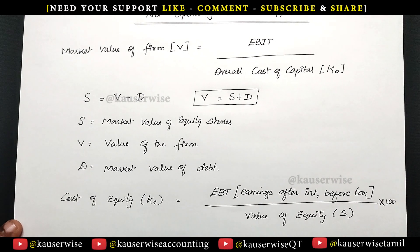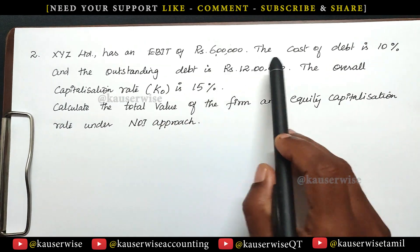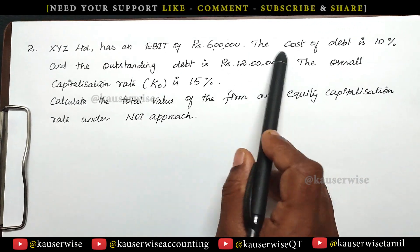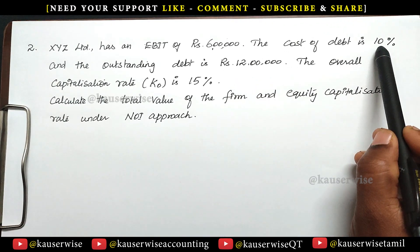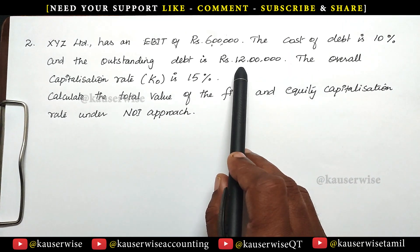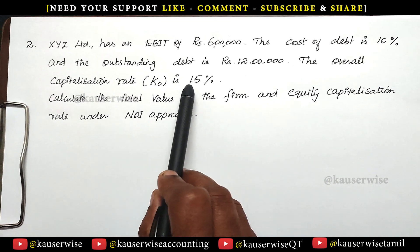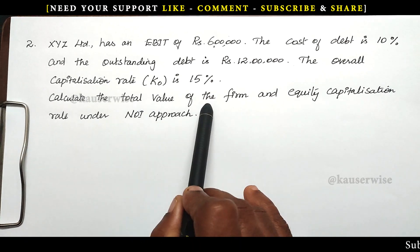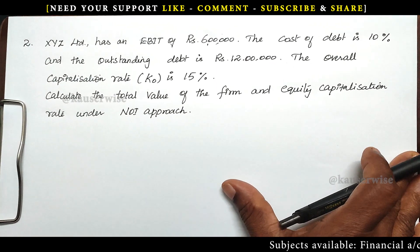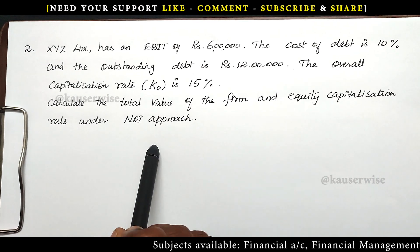Now let's see the numerical problem for better understanding. XYZ Limited has an EBIT of 6 lakhs, the cost of debt is 10%, and the outstanding debt is 12 lakhs. Interest will be calculated as 10% on 12 lakhs. The overall capitalization rate K-O is given as 15%. We are asked to calculate the total value of the firm, that is V, and the equity capitalization rate, that is KE, under the net operating income approach.